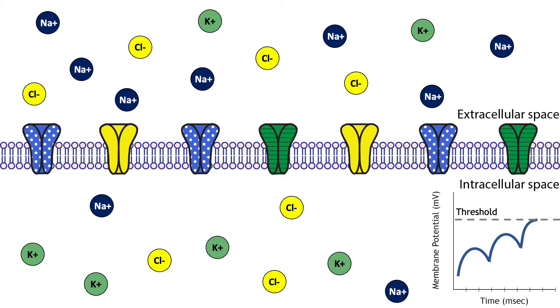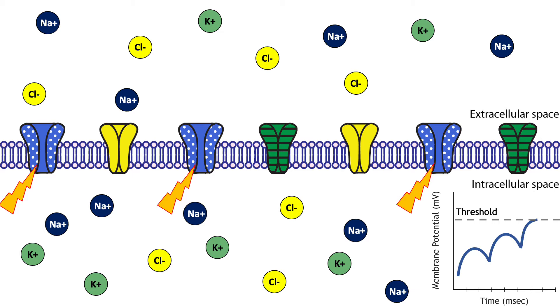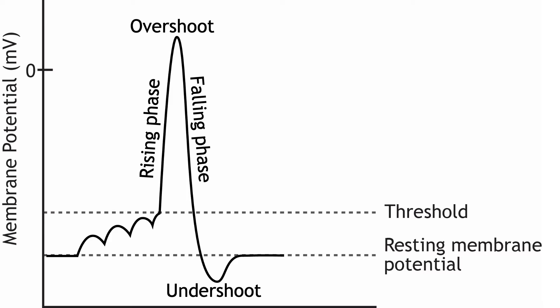As EPSPs summate, a result of ion movement not shown in the animation, the cell's membrane potential will depolarize. Reaching threshold causes voltage-gated ion channels to open. Once the channels are open, ions will move toward equilibrium. The action potential begins when the cell's membrane potential reaches threshold. Once initiated in a healthy, unmanipulated neuron, the action potential has a consistent structure and is an all-or-nothing event.